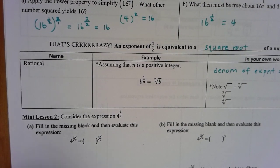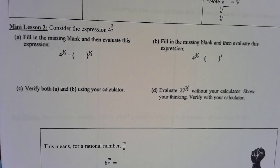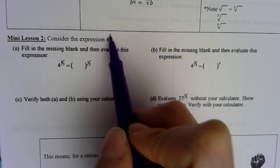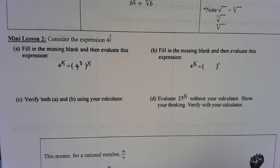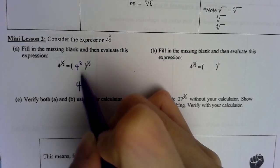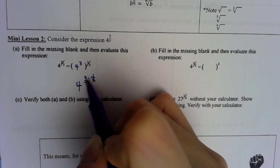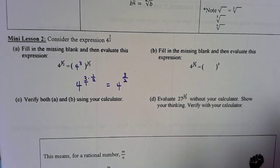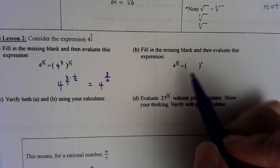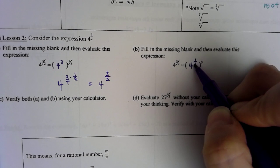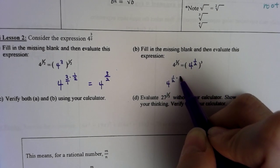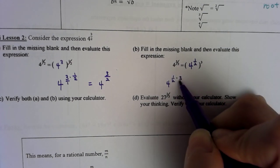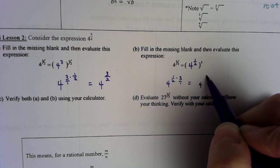Let's do some more digging. Instead of keeping the numerator of the exponent as 1, let's consider 4 raised to 3 over 2. We can think of 3 over 2 as 4 to the third, raised to the half power — because exponent raised to exponent gives us 3 times 1/2, and 3 over 1 multiplied gives 4 raised to 3 over 2. We can also think of it as 4 to the half power, then raised to the third power — multiplying again still gives 4 raised to 3 over 2.